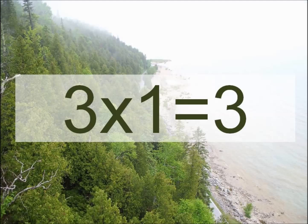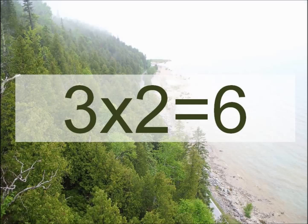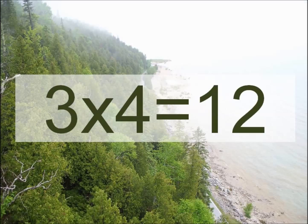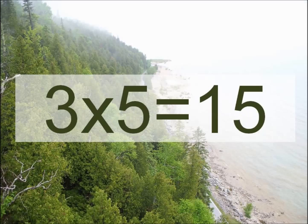Three times one equals... Three times two equals... Six. Three times three equals... Nine. Three times four equals... Twelve. Three times four equals... Twelve. Three times five equals... Fifteen. Three times five equals... Fifteen.